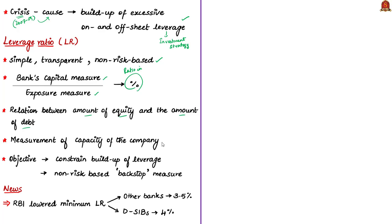The leverage ratio is a measure of the capacity of a company to meet its financial obligations. The first objective of this ratio is to constrain the buildup of leverage in the banking sector to avoid destabilizing deleveraging processes that can damage the broader financial system and economy. The second objective is to reinforce risk-based requirements with a simple, non-risk-based backstop measure — where backstop means an emergency precaution or last resort.